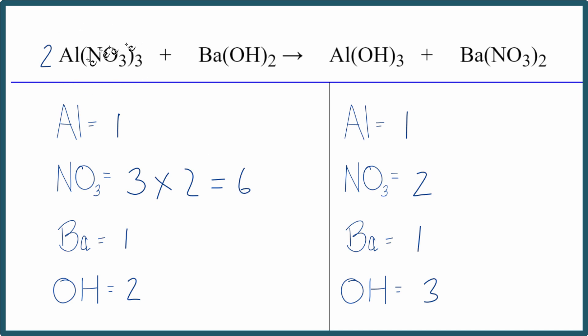So I have one aluminum times two, that'll give me two of those. But now I can come over on this side and put a three in front of my barium nitrate. So I have the one nitrate here times two, so two nitrates times three. That'll give me six nitrates.